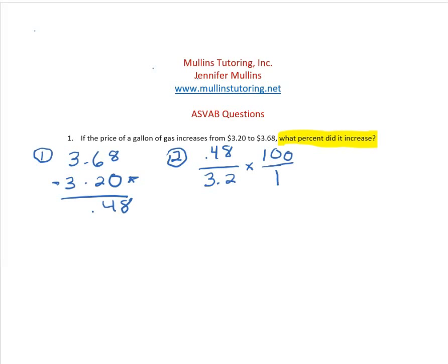Now we're just going to multiply straight across. So 0.48 times 100 equals 48, and 3.2 times 1 equals 3.2.